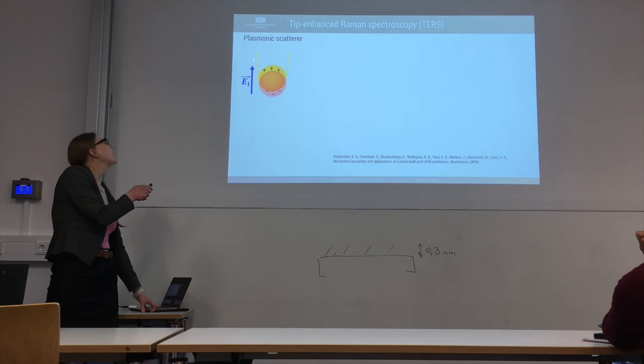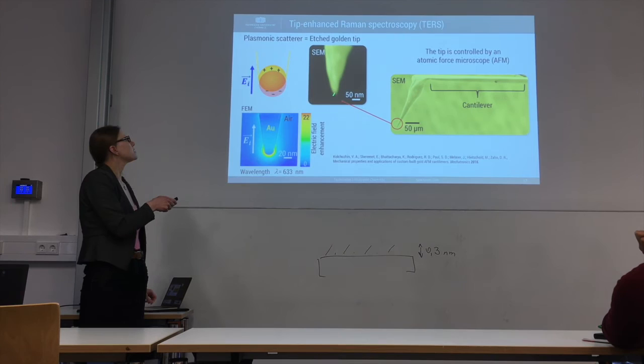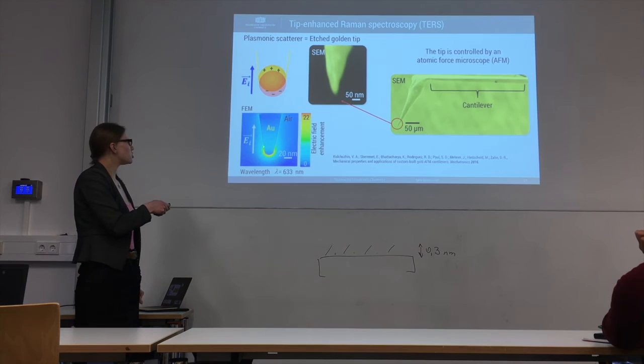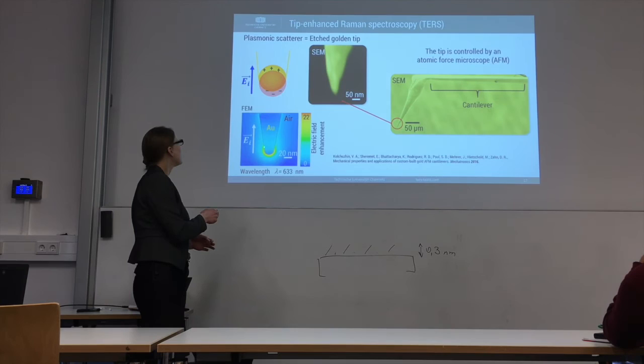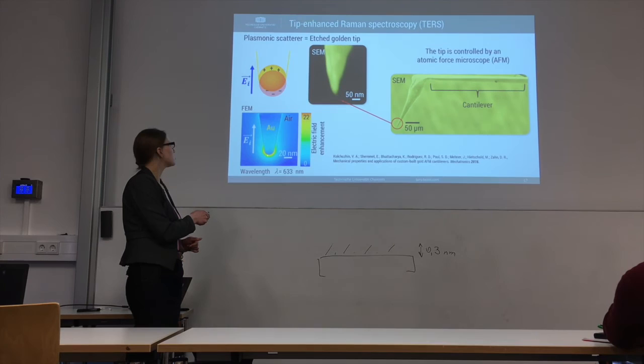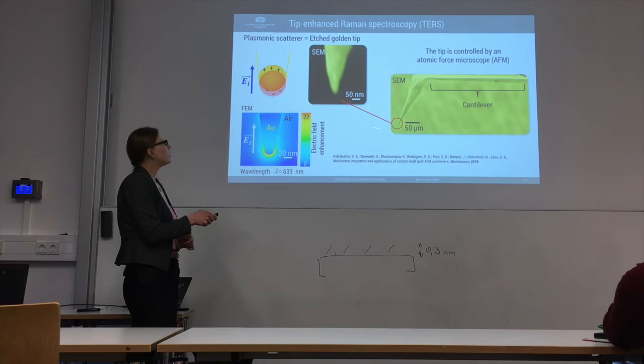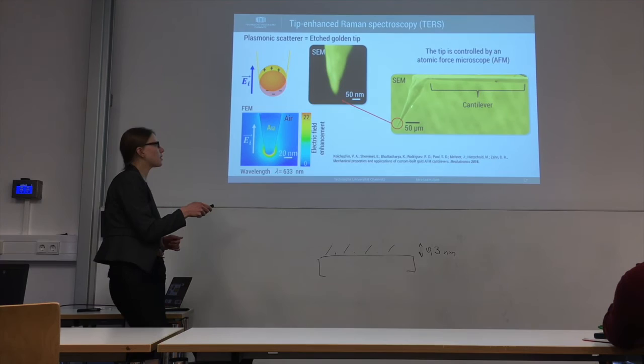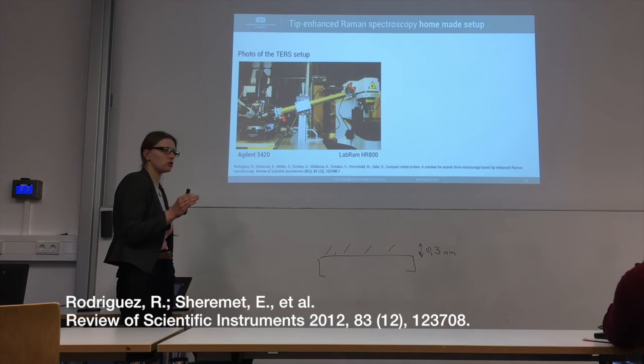What we are going to do is take a gold tip where the apex is very sharply edged. Such a tip will also generate electric field enhancement, just like the nanoparticle, and it will be very localized to the apex of the tip. Practically, we take a gold wire which is formed so that we can use it experimentally, etch it electrochemically, and then we need a way to control it — for that we use an atomic force microscope.